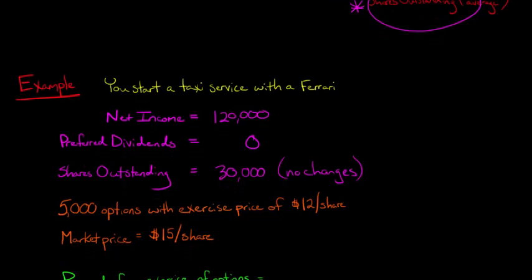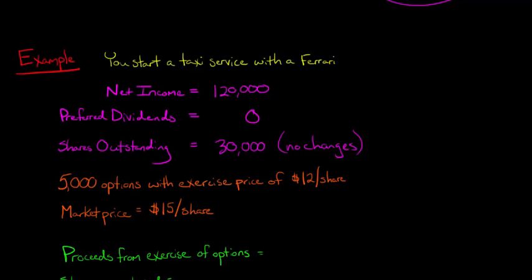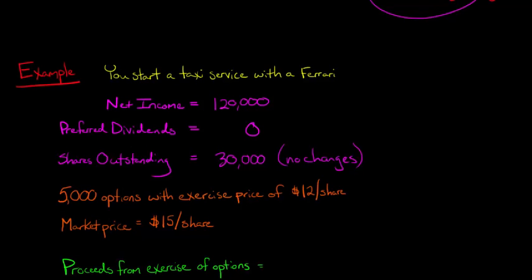Now we want to say, how would we go about calculating by using this treasury stock method? What we're going to do is assume that as of the beginning of the year, January 1st, everybody who held these options decided to convert them. We're going to have to give them 5,000 shares of our firm, but we're also going to get some money. We've got 5,000 options times $12 a share. So we're actually going to get $60,000.